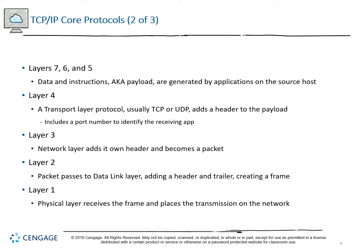At Layer 4, we usually use TCP, but sometimes may use UDP, to add an identifying header to the payload. The header includes a port number that identifies the app that will be receiving the information. At Layer 3, the network layer adds its own header and becomes a packet, which identifies the IP information. Layer 2 is where we add a header and trailer, creating a frame, and identify the source and destination MAC addresses.